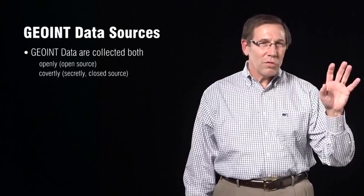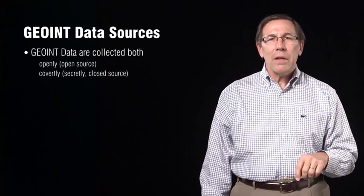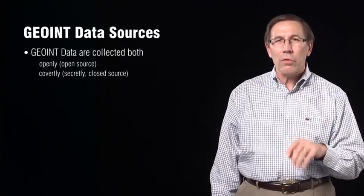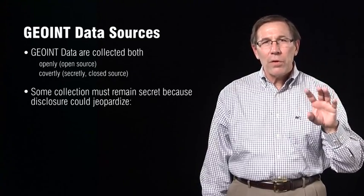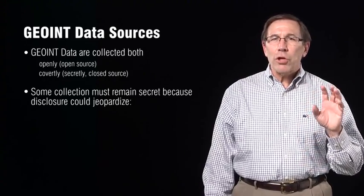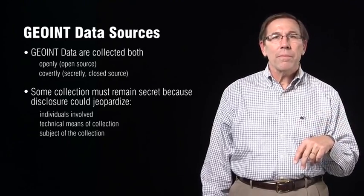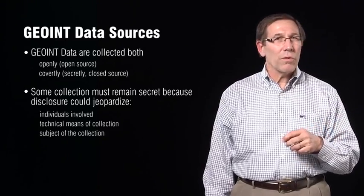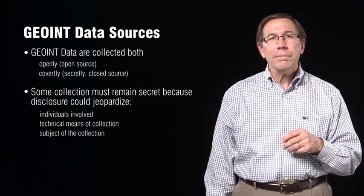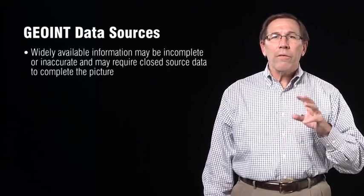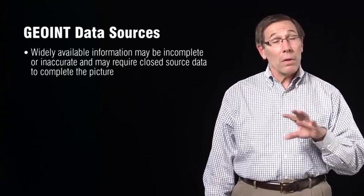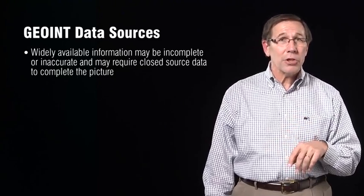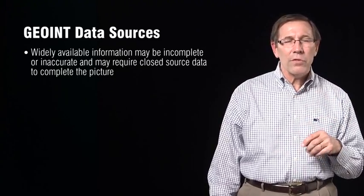Geo-int data are collected both openly and covertly. Covertly means secretly, and data collection covertly can be considered closed source — that's the term we'll use throughout this. Some intelligence collection must remain covert or secret, as their disclosure could jeopardize the individuals involved, the technical means of collection, or the subject being collected about. Open source data, or information that is widely available, may be incomplete or inaccurate and may require closed source data to complete the picture. So they really do work together — there's a great synergism between them.